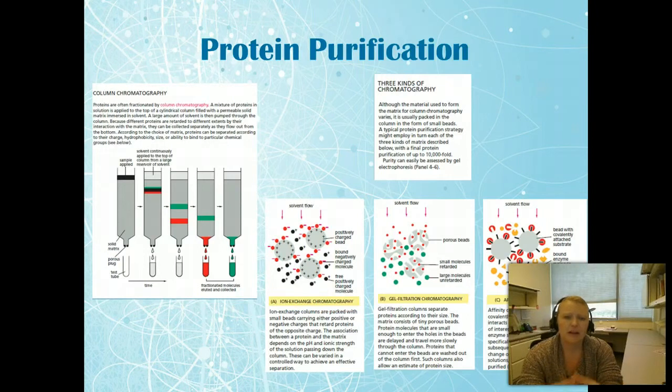There's three types of column chromatography: ion exchange chromatography, gel filtration chromatography, and affinity chromatography.